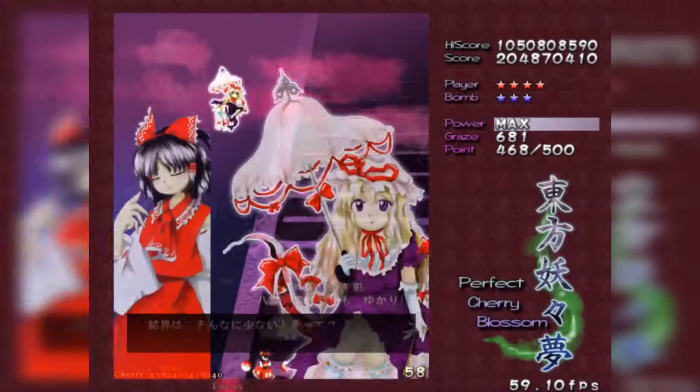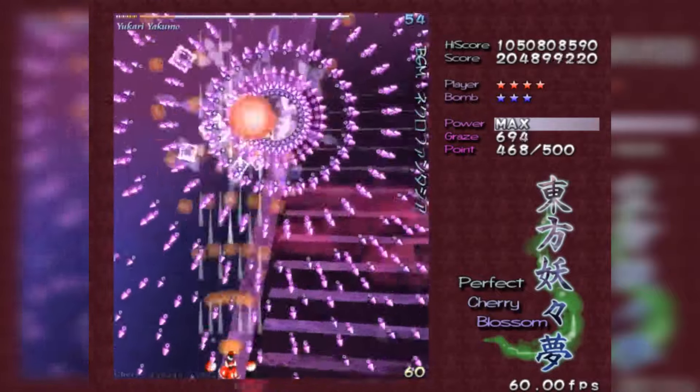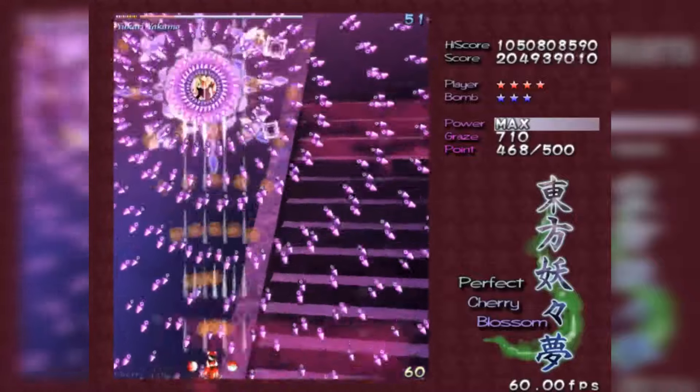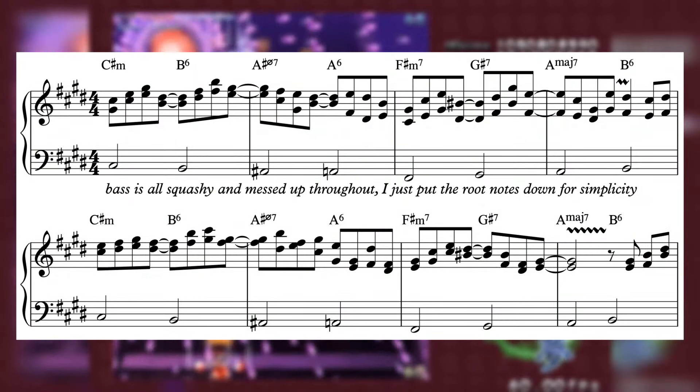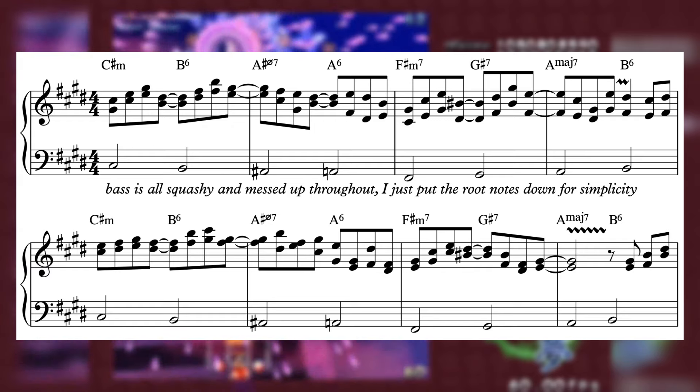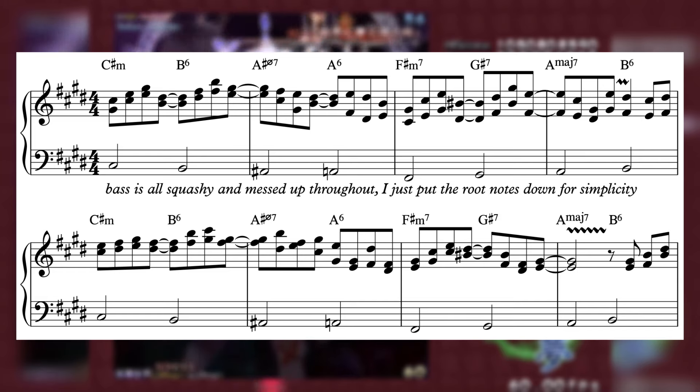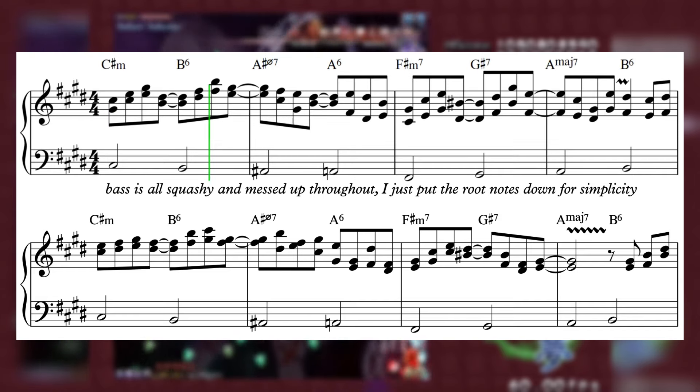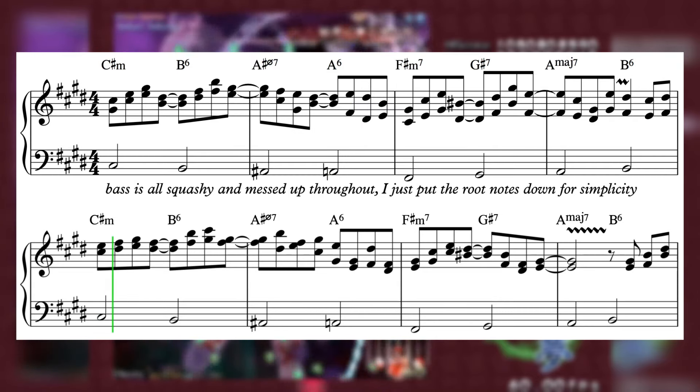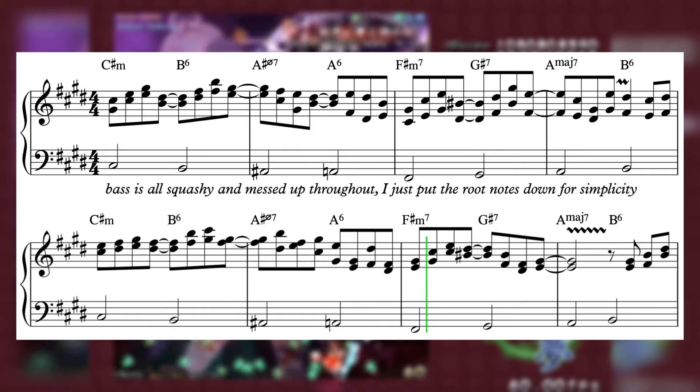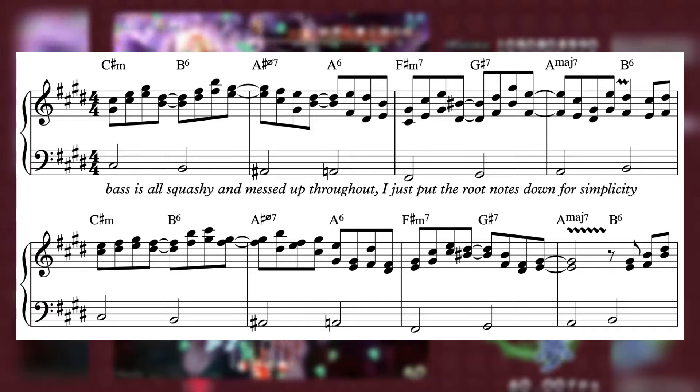In Necrophantasia from Perfect Cherry Blossom, the whole structure of the tune is tied to how the tune changes key. Each new section is accompanied by a dramatic modulation, with the piece moving through 5 different keys before it's done. We start off with a bold melodic statement in C Sharp Minor, setting the stage with a catchy synth melody over a chord progression that's very typical of Toho music, with chords descending from or ascending to our tonic C Sharp Minor in stepwise motion. Once again, we've immediately established this piece's musical identity.